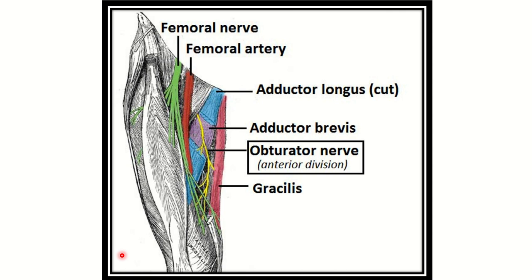Here we can see the obturator nerve, located in the medial compartment, or adductor compartment, of the thigh. Beside it we can see the femoral artery and femoral nerve. The muscles visible here are adductor longus, adductor brevis, and gracilis — these three muscles receive innervation from the obturator nerve. The obturator nerve also has an anterior branch, and some other branches supply additional muscles.